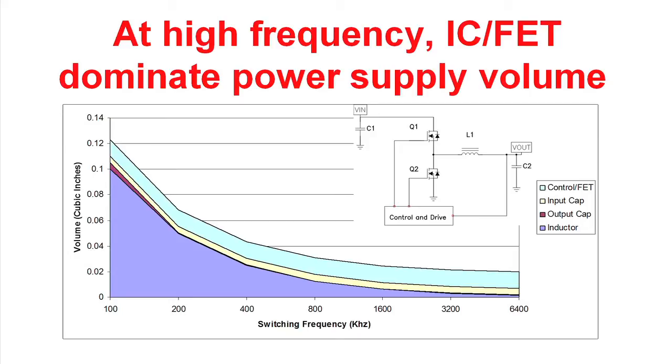But we'll see constant values of input filter capacitors and the control circuitry. So once we get past one or two megahertz operating frequency, the power supply volume is going to be dominated by the control circuitry and the input filter capacitor.